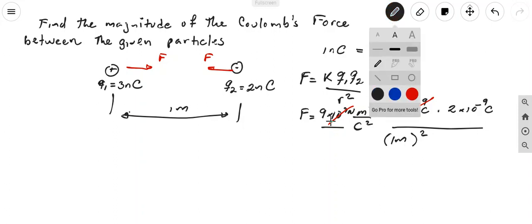So now we have, the force is equal to 9 times 3 is 27, and 27 times 2 is 54. So we have 54.